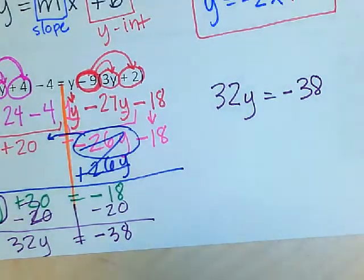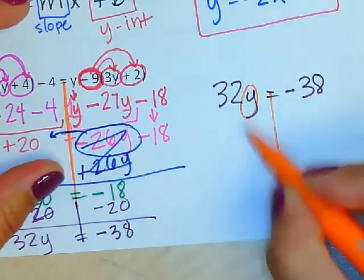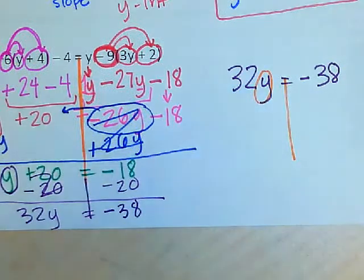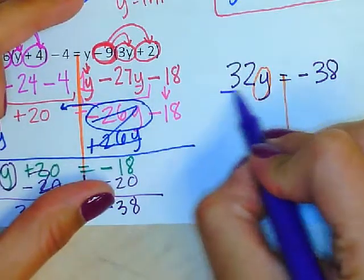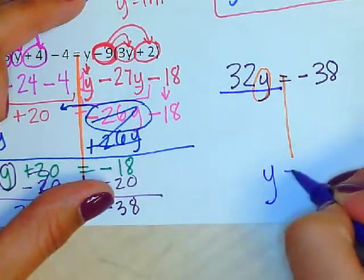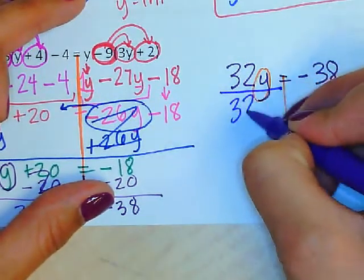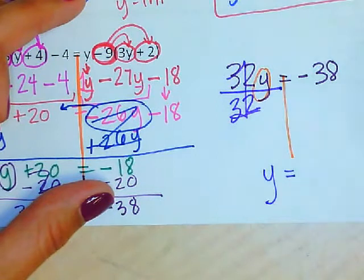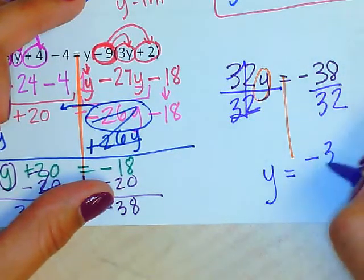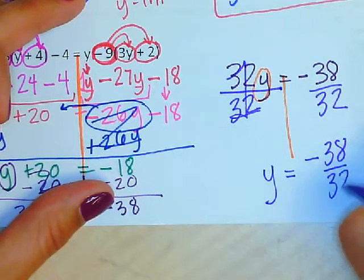I still don't have y alone. When a number and a letter are together, they are being multiplied. The opposite of multiplication is division. I'm going to divide by the number I want to get rid of. I want to get rid of the 32 so that y is by itself. If I divide by 32, that becomes a 1 and it's gone. What I do to one side, I do to the other. So y equals negative 38 over 32.